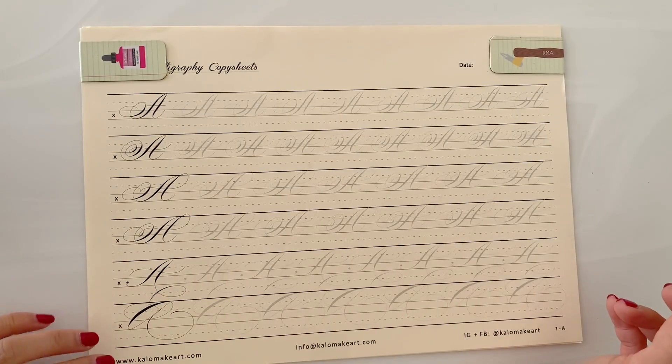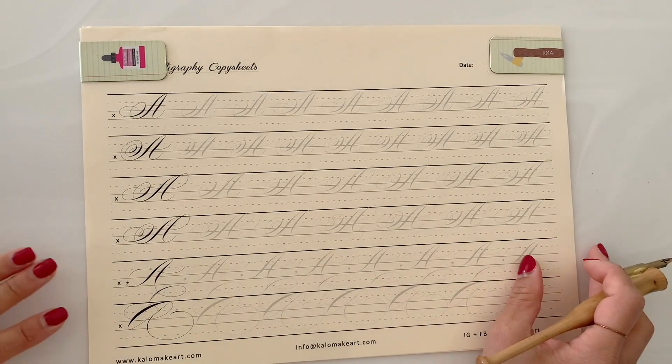Okay, so we're going to start with capital A. You will see that there are 6 variations on this page.